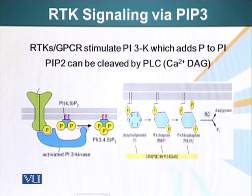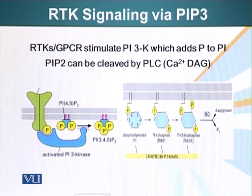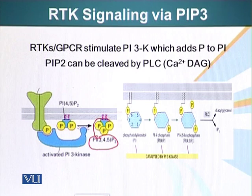One of those attracted proteins is phosphatidyl inositol kinase. When it is recruited to the site near the plasma membrane, it adds a phosphate group to phosphatidyl inositol. When this happens, this molecule embedded in the plasma membrane serves as a docking site for other proteins.